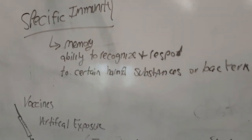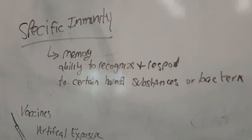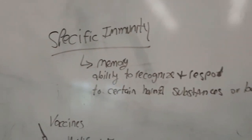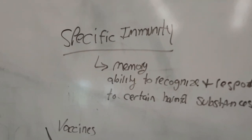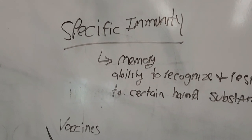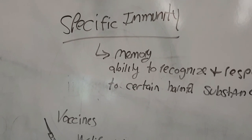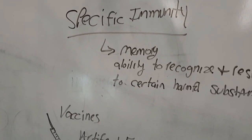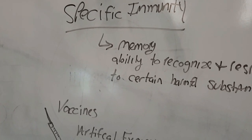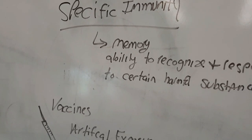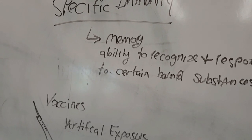I want to talk about two different types of immunity. The first one is our specific immunity, and that involves memory and the ability of our immune system to recognize and respond to certain harmful substances — bacteria and viruses that come into our body.